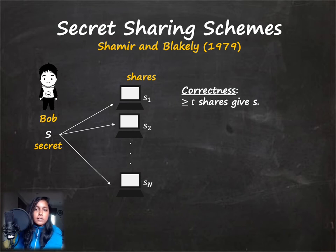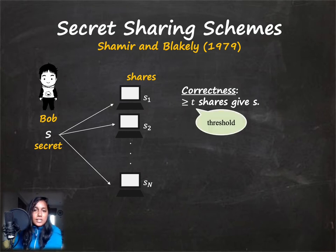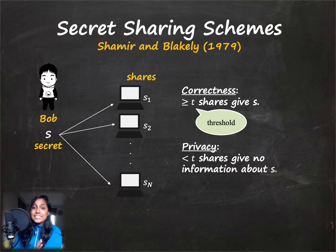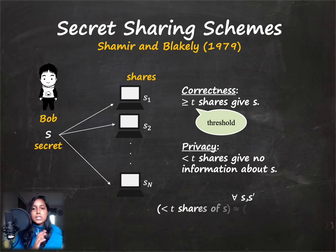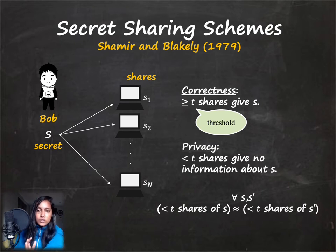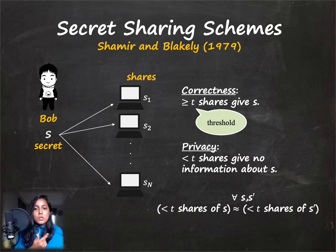The property we seek from such a scheme is firstly correctness, which tells you that if you have at least T of these shares that should help Bob recover the secret S — T being some value less than or equal to N, which we call the threshold. The second property is privacy, which tells you that having fewer than T shares should not give any information about Bob's secret. This is captured by saying that for any two distinct secrets S and S′, the set of fewer than T shares of S looks close to the corresponding set of shares for S′.